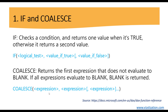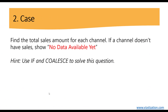Now that we have these concepts as a reference, let's move on to the case. The question is: find the total sales amount for each channel. If a channel doesn't have sales, show 'No Data Available Yet.' The hint is to use IF and COALESCE to solve this question, and that's exactly what we're going to use. Let's go to Power BI Desktop.